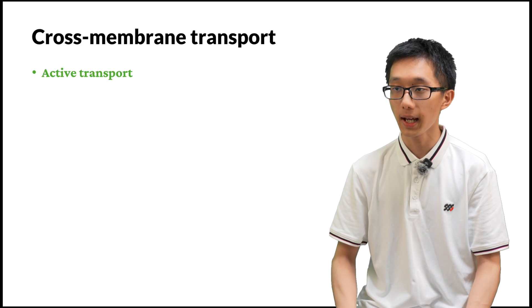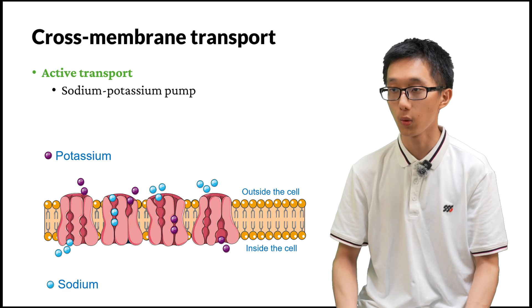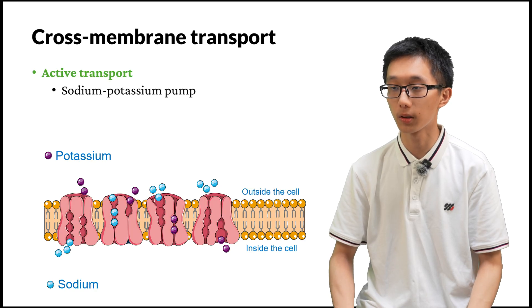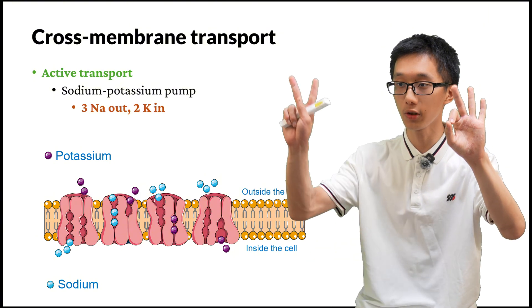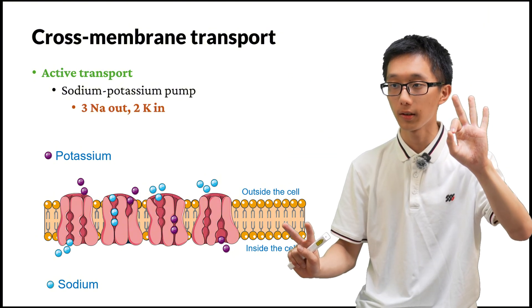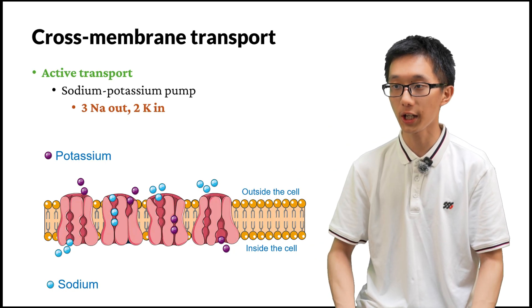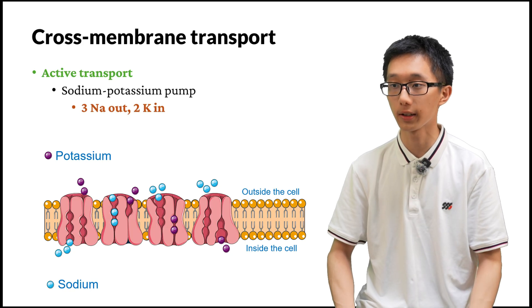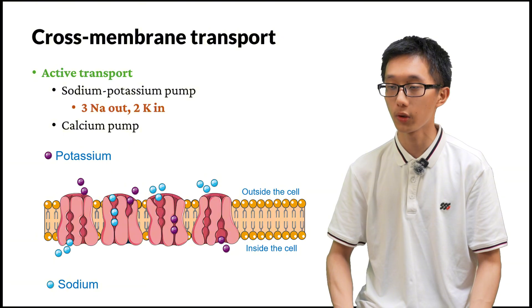Active transport is realized through ion pumps. For example, the sodium-potassium pump, which will be very important when we talk about action potentials. The sodium-potassium pump has several peculiar properties: first, it carries two types of ions; second, it usually pumps three sodium ions out and two potassium ions in. Note that 3 minus 2 is 1 — therefore there is a net change of one unit of charge on each side of the membrane, which is an important characteristic of this pump. We also have other types of pumps, for example the calcium pump, which will be important later.